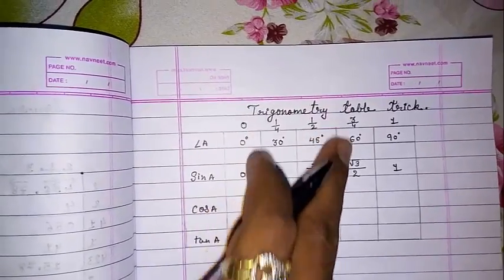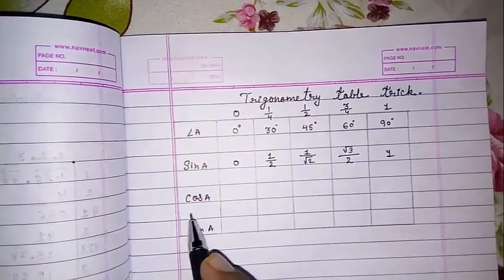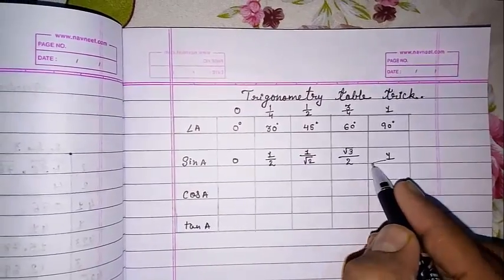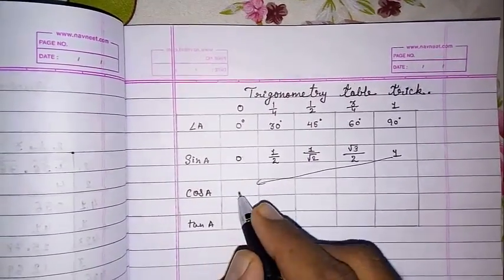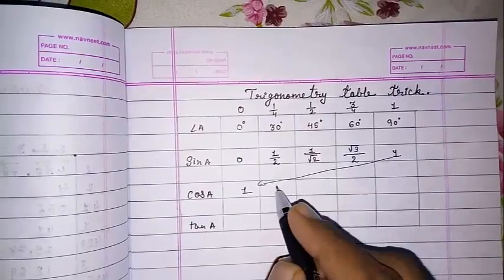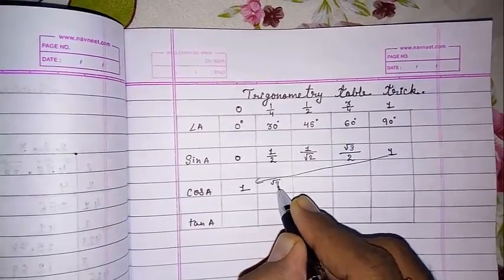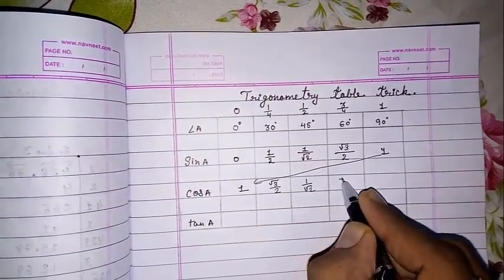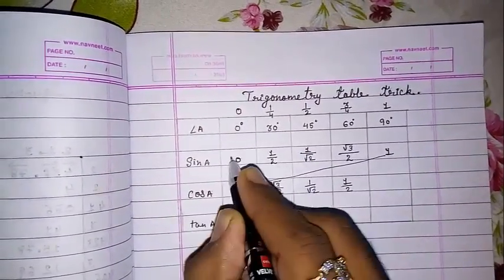Now for finding cosine, we have to just reverse the order. This 1 will come here, then root 3 by 2 here, then 1 by root 2, then 1 by 2, and then 0 here.